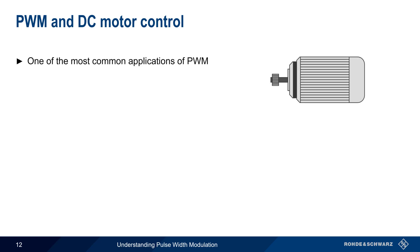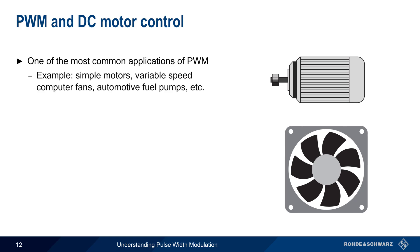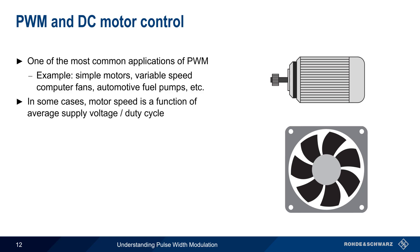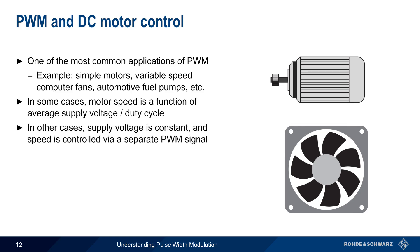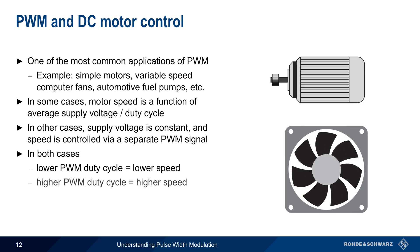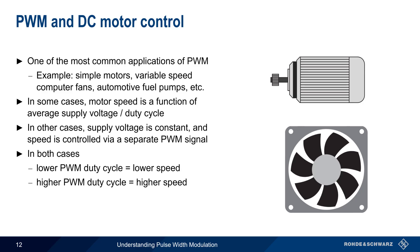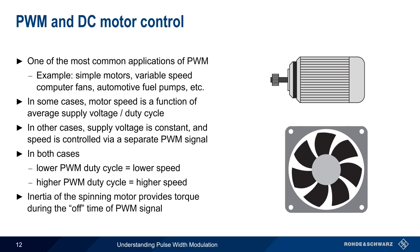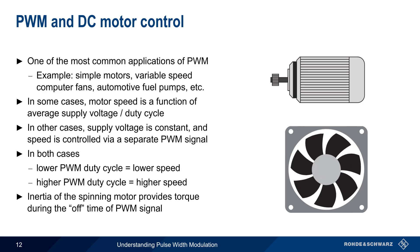Another very common use of pulse width modulation is controlling DC motors — for example, changing the speed of a fan in a computer case, or the speed of a vehicle's fuel pump. In some cases, the speed of the motor is a function of the average voltage, which in turn is a function of the duty cycle of the pulse width modulated signal. But in other cases, such as in many computer fans, the supply voltage is held constant, and a separate pulse width modulated signal is used to control the speed. In both cases, a lower duty cycle produces a lower rotational speed, and a higher duty cycle produces a higher speed. Note that even though pulse width modulation means that power is not supplied continuously to the motor, the motor's inertia can provide torque and keep the motor spinning even during the off portion of the cycle.